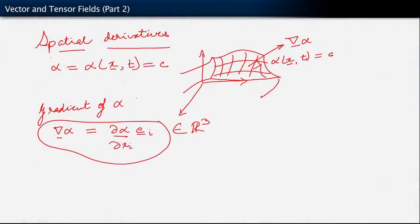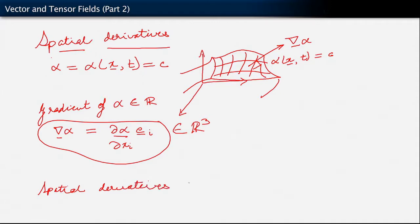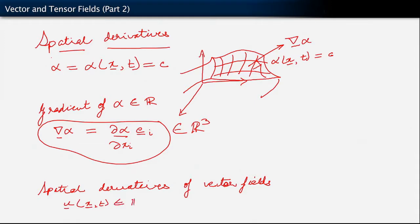Let me just remind ourselves that we were talking about alpha being a scalar here, by saying gradient of alpha belongs to R. Now let's talk in terms of spatial derivatives of vectors. These have to be vector fields — we do need them to depend upon position x in order to compute their spatial derivatives. So, as before, we have u of x comma t, which belongs to R3.